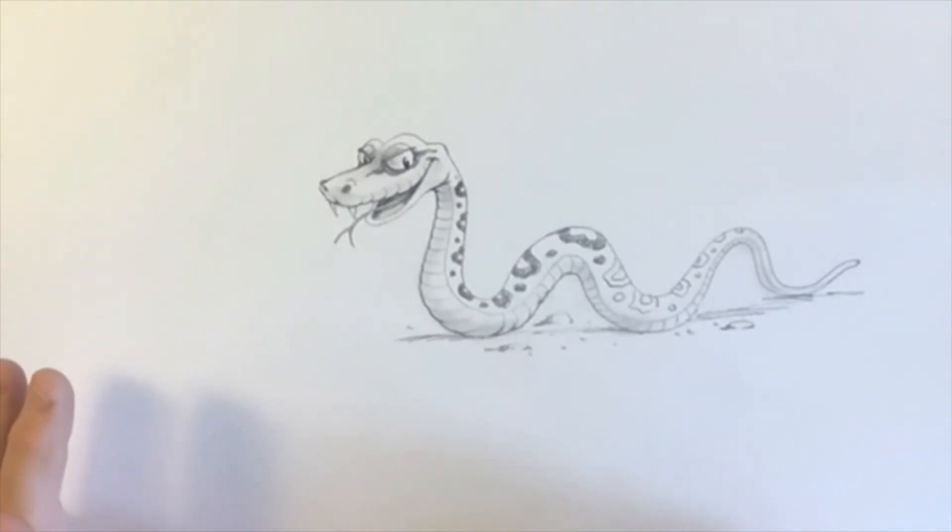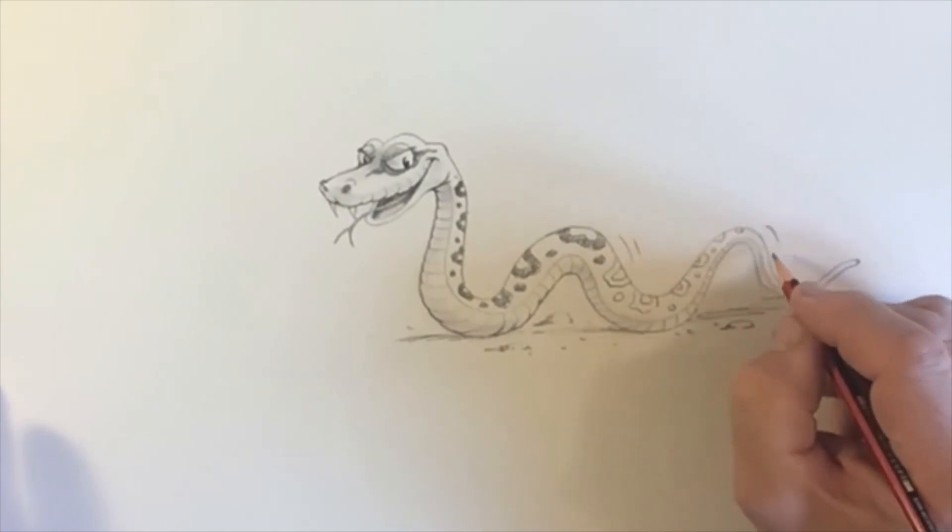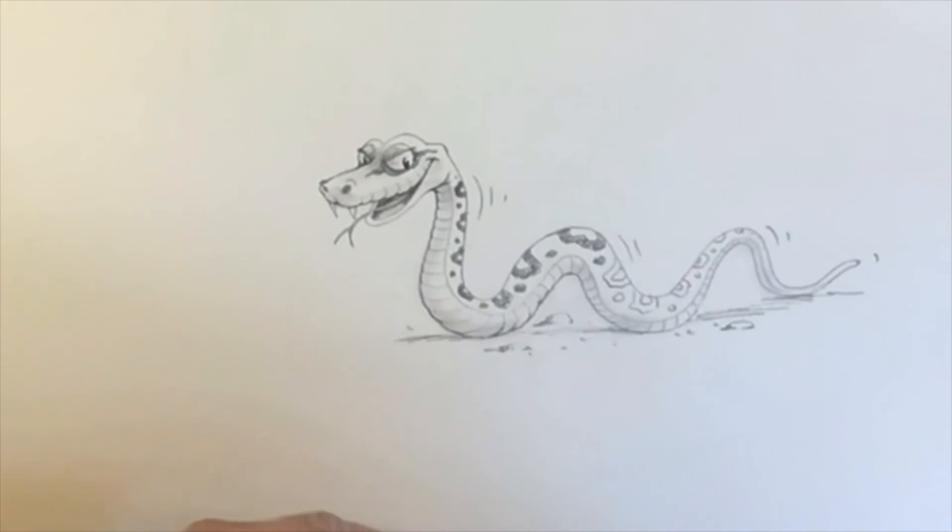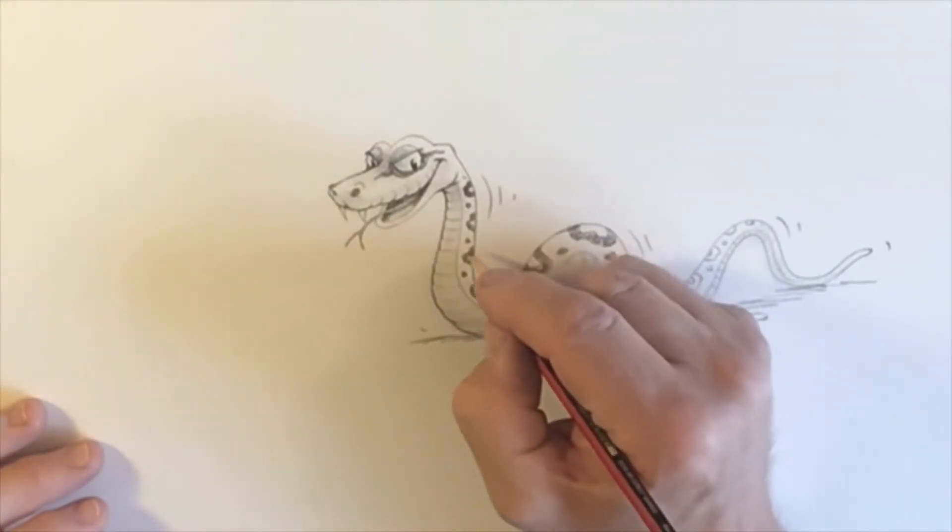And to make the snake move, we can make some little movement lines like this, behind him. So it looks as though he's wiggling off in that direction. Okay. I think we're nearly there with our snake.